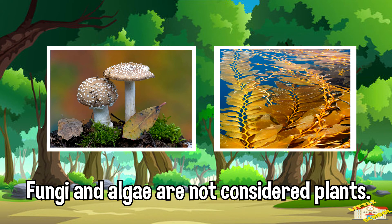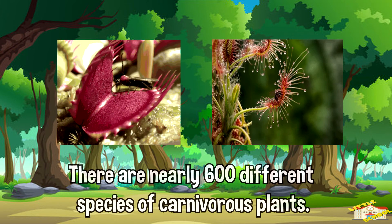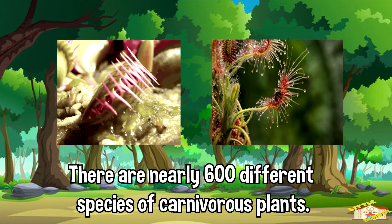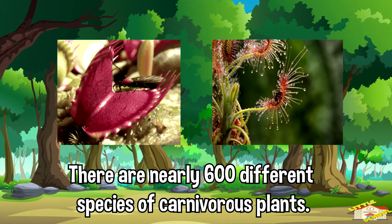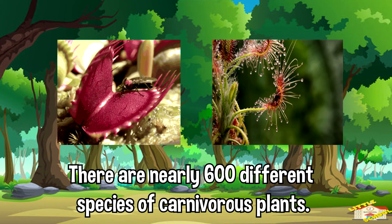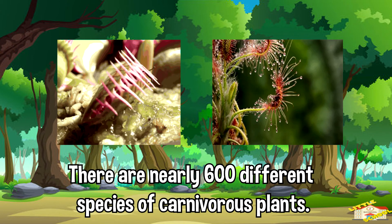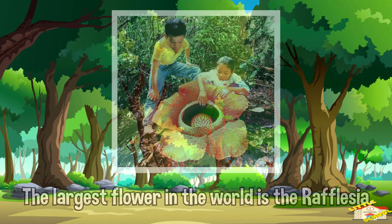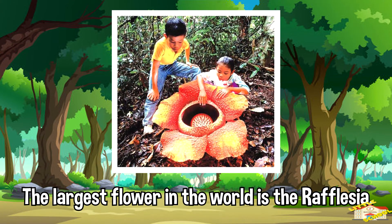Fungi and algae are not considered plants but are part of their own kingdoms. There are nearly 600 different species of carnivorous plants that actually eat insects and small animals. The largest flower in the world is the rafflesia, which can grow to over three feet in diameter.